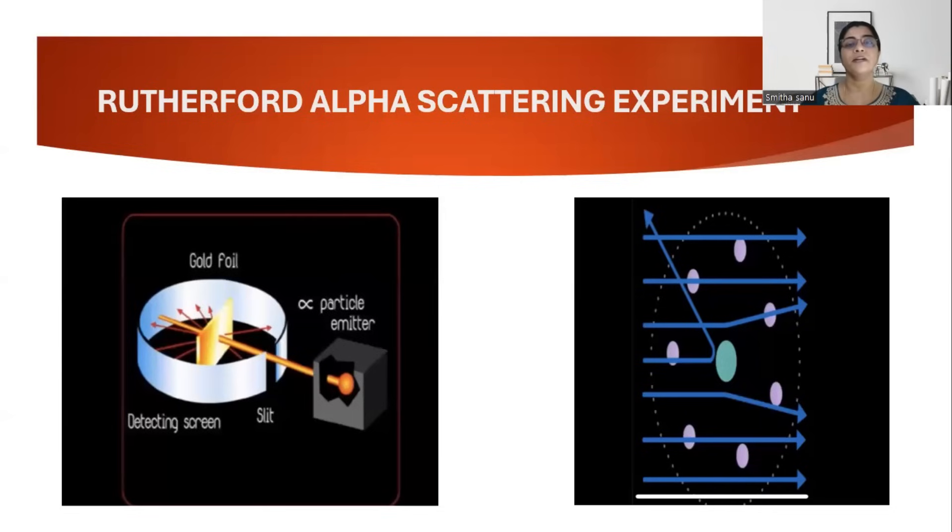In the alpha-scattering experiment, we had seen that when a positively charged alpha particle from a radioactive source is passed through a gold foil, as per the classical theory, which was the Plum-Pudding model, the expectations were that the alpha particles shouldn't deviate much.